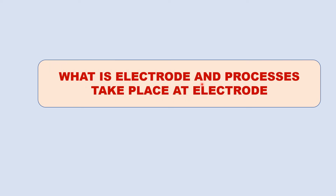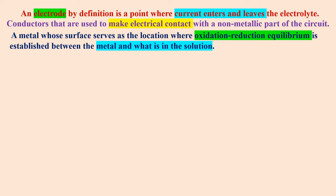What is an electrode and the processes taking place at its surface? An electrode by definition is a point where current enters or leaves the circuit, meaning current will flow towards or away from the electrode. It makes an electrical contact with the non-metallic part of the circuit. The surface of the electrode acts as a site for redox equilibrium — that equilibrium is between the solution or electrolyte and the metal rod or metal plate acting as the electrode.